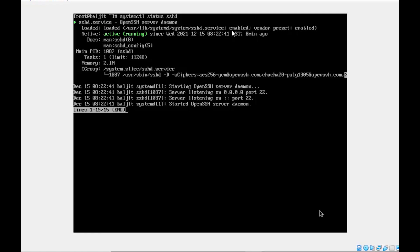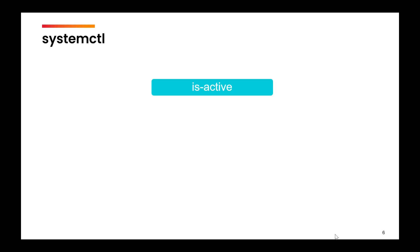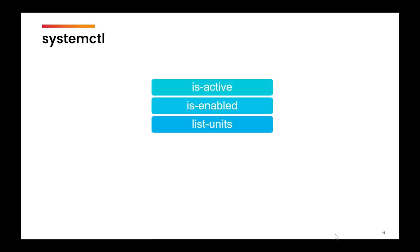The systemctl command has certain options. The first is is-active — the output will tell you whether the service is active or not. The second is is-enabled — the output tells you whether the service is enabled or not. The third is list-units, which shows all units of a specific type. For example, if you want to see all units of type 'service', you use list-units with --type and specify the type, such as service or sockets.